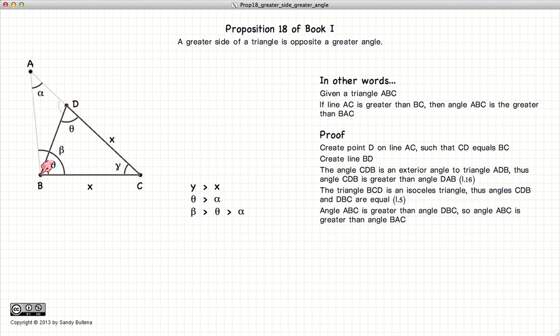It's pretty clear that the angle theta is less than beta. Or in other words, beta is greater than theta, which is greater than alpha.